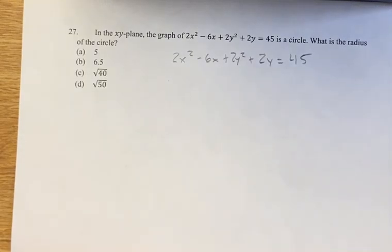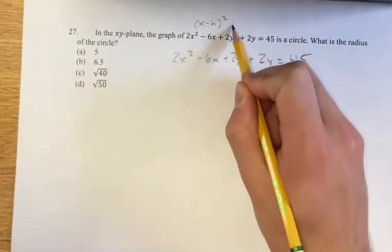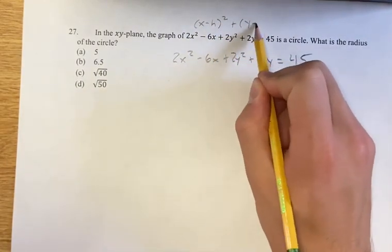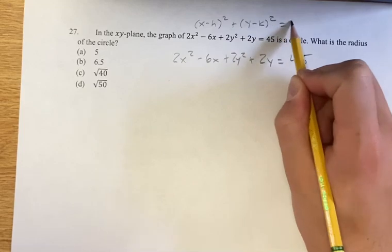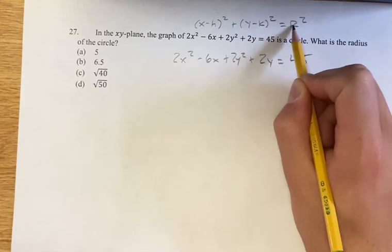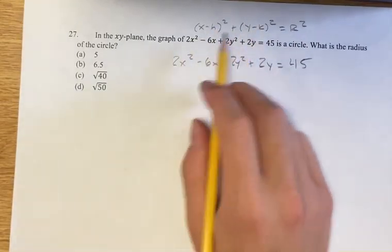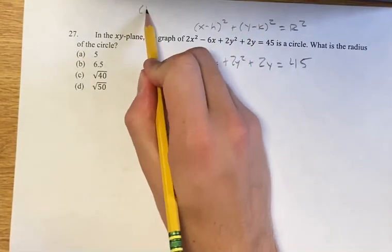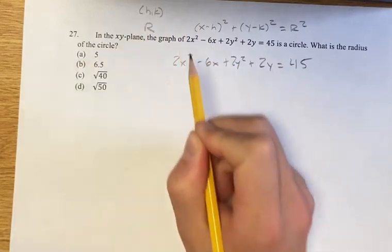We want to find the radius of the circle. To do that, we want to get it into the form x minus h squared plus y minus k squared equals r squared. In this form, (h, k) is the center of the circle, and r is the radius.